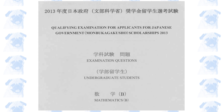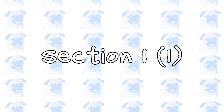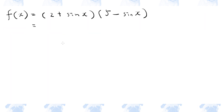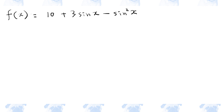This is the 2013 MEXT Undergraduate Mathematics B paper. First of all, let's expand these brackets. Next, in order to find the minimum of this function, we need to differentiate it.